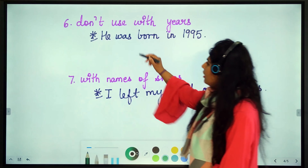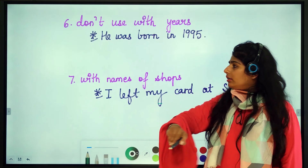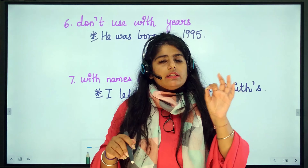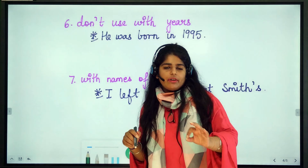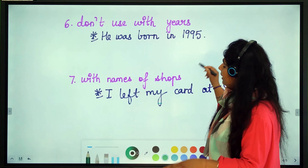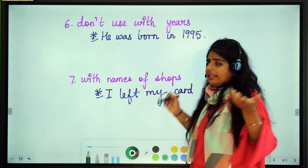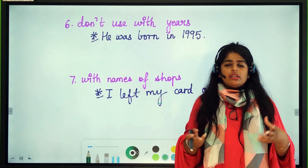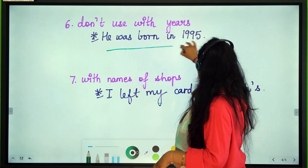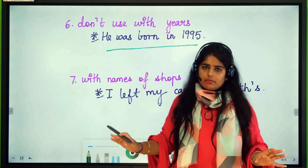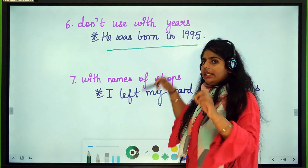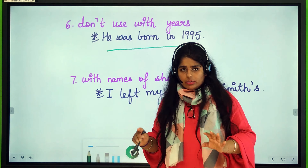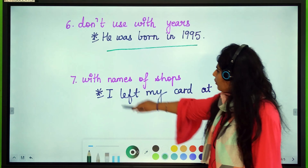Next: we do not use the definite article 'the' with years. This is a very common mistake students make in both speaking and writing. For example, students write 'He was born in the year 1995' — this is grammatically incorrect. The correct statement is: 'He was born in 1995.' You don't need to add 'the,' 'a,' or 'an' before a year.